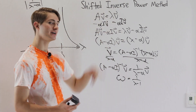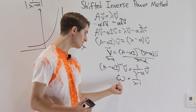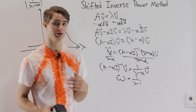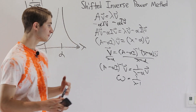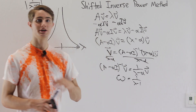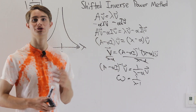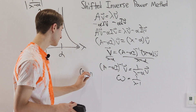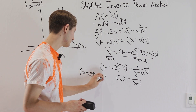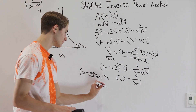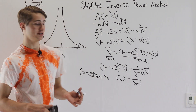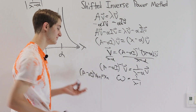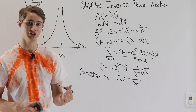In practice, you normally wouldn't compute (A minus alpha I) inverse directly because computing matrix inverses is computationally intensive for larger matrices. Instead, to iterate you solve the equation (A minus alpha I) x sub n+1 equals x sub n, because solving for x sub n+1 has the same effect as multiplying by (A minus alpha I) inverse times x sub n. You can then use something like LU decomposition to solve this system, which is less computationally intensive.